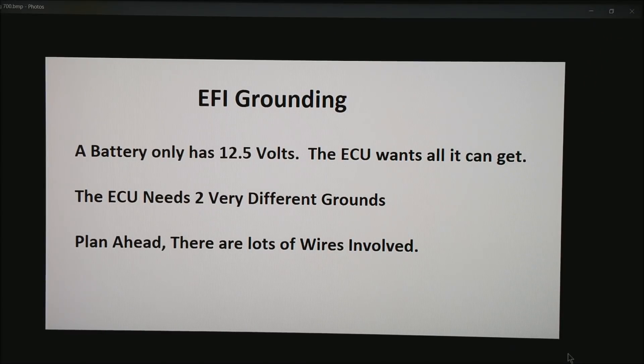So now in conclusion remember a battery only has 12 and a half volts to work with and we want to do the best we can especially during cranking to get all the voltage to the ECU that we can. These ECUs typically completely fall apart around seven or eight volts so you don't really have much to spare. The ECU needs two very different ground systems. One for the 5 volt sensors and one for the 12 volt sensors. And make sure you plan ahead there's lots of wires involved in one of these systems.